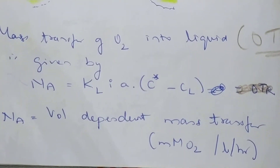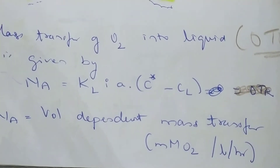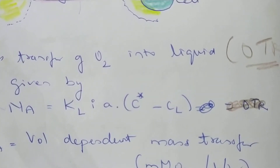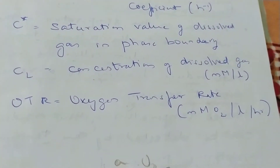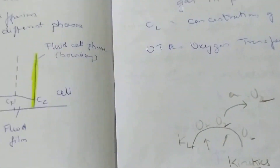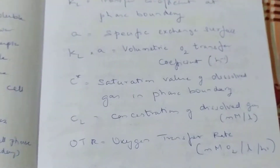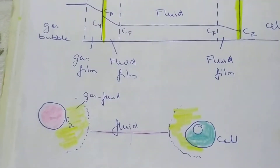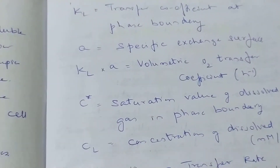So please remember: oxygen transfer rate is the total volume of oxygen transferred. kL·a is the volumetric oxygen transfer coefficient, C* is the saturation value, and CL is the concentration of dissolved gas — that is the oxygen transfer rate formula. There can be a small exam topic on this. Whenever a question is asked on aeration, please follow this formula, draw this graph, draw this picture — it helps in understanding what is meant by oxygen transfer rate.